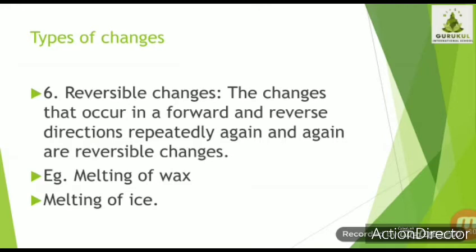The sixth type of change is reversible change. Reversible changes are changes that occur in a forward and reverse direction repeatedly. For example, melting of wax — a candle heated becomes liquid, and when cooled it solidifies back to wax. Another common example is melting of ice — ice is converted to water, and from water you can obtain ice again. Such changes are called reversible changes.